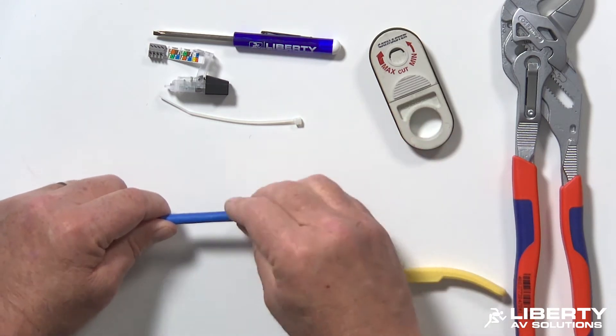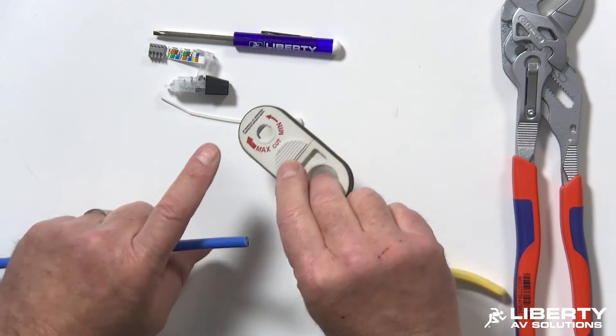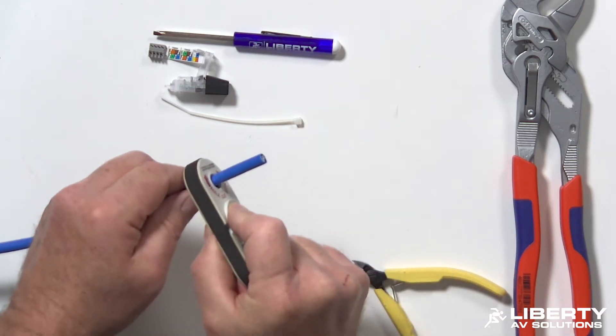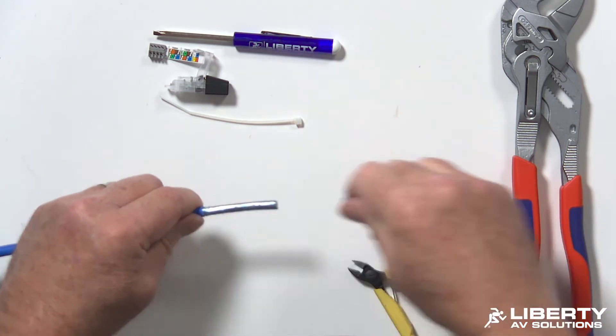Next step's going to be strip the jacket. I'm going to do about one and a half to two inches. Got this cigar cutter style stripper, I'm going to use the min-spin so I don't cut too deep. Now I'm going to pop my jacket off.